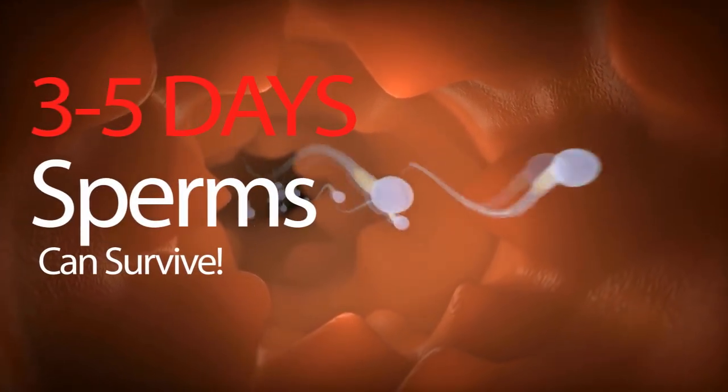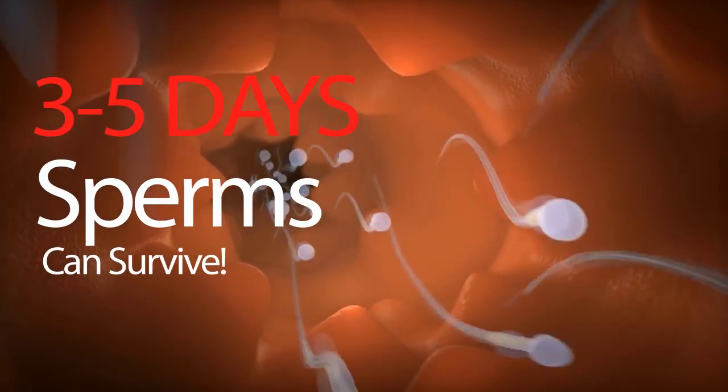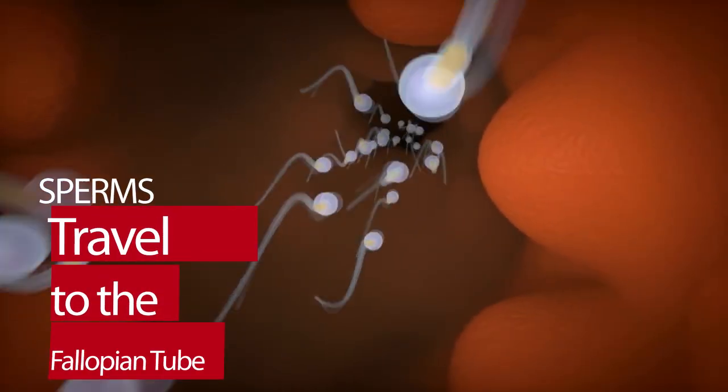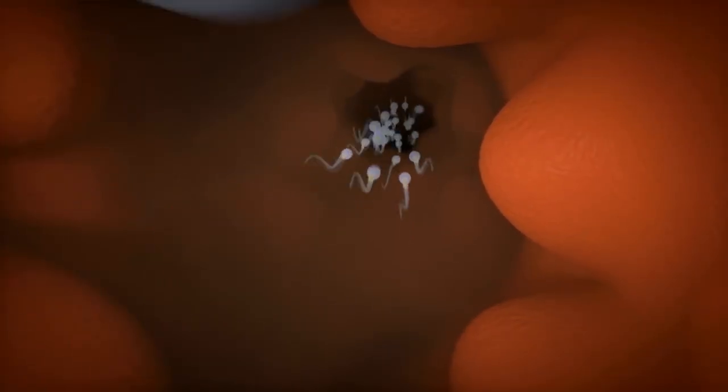Sperms are able to survive three to five days in hopes of uniting with the egg. The capacitated sperm migrate to the fallopian tube to fertilize the egg.